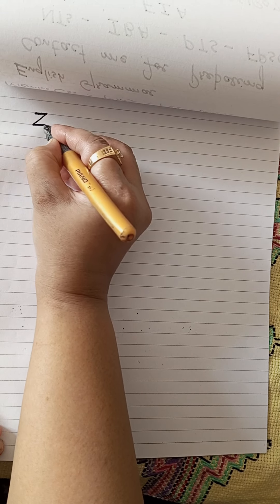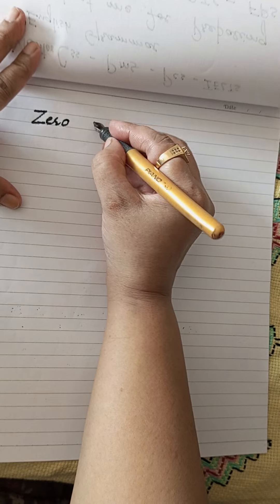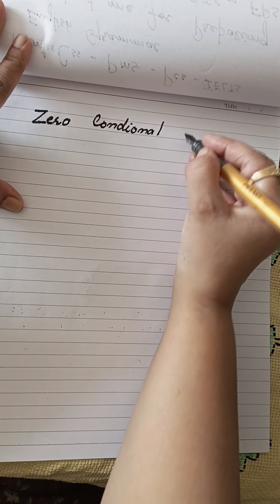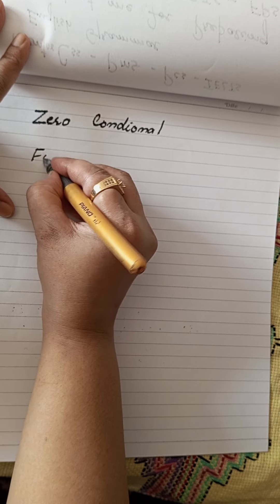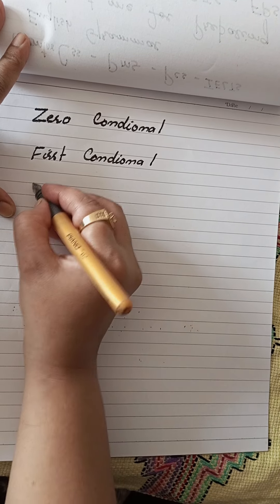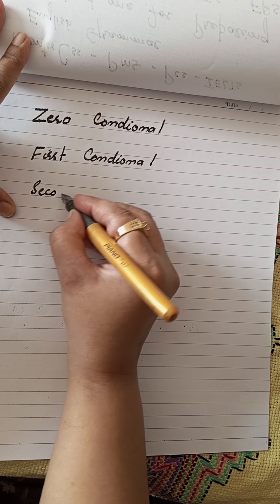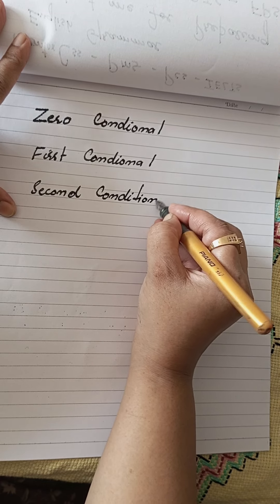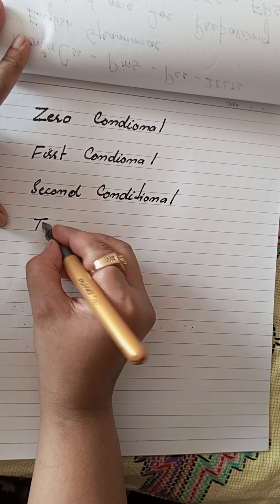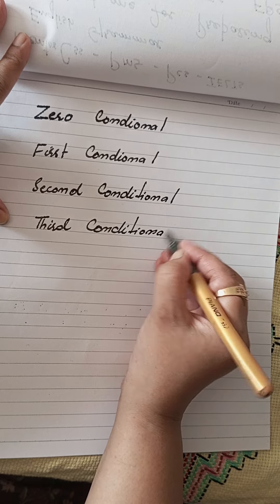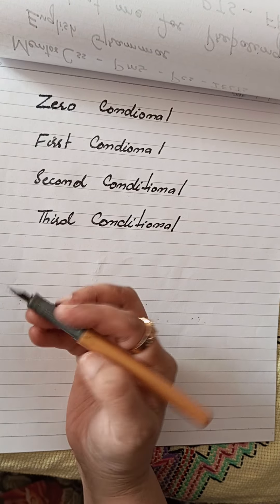There are many types of conditional sentences — for example: zero conditional, then first conditional, second conditional, and third conditional. But first we should know about the definition and the meaning of these.